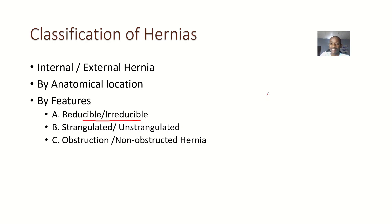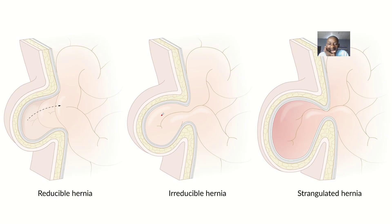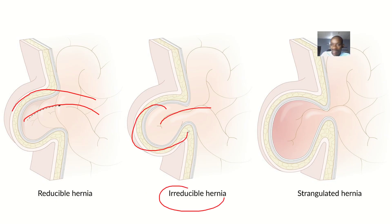Based on features, we have hernias that could be reducible or irreducible. When we saw one patient with a hernia in the clinic, our coordinator actually navigated and pushed back the hernia. Hernias that will go back and come again are called reducible — they can go back and come back. The irreducible ones are the ones that are just there permanently.